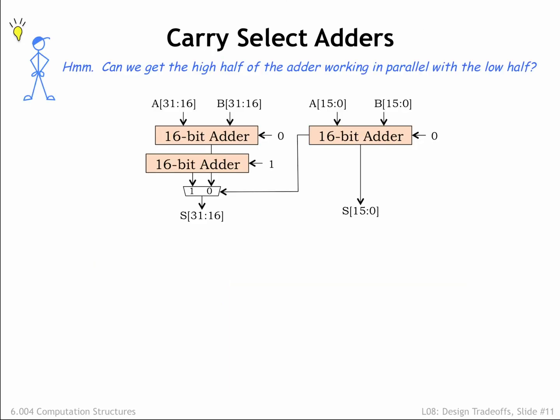Here's our first attempt at improving the latency of our addition circuit. The trouble with the ripple-carry adder is that the high-order bits have to wait for the carry-in from the low-order bits. Is there a way in which we can get the high-half of the adder working in parallel with the low-half?